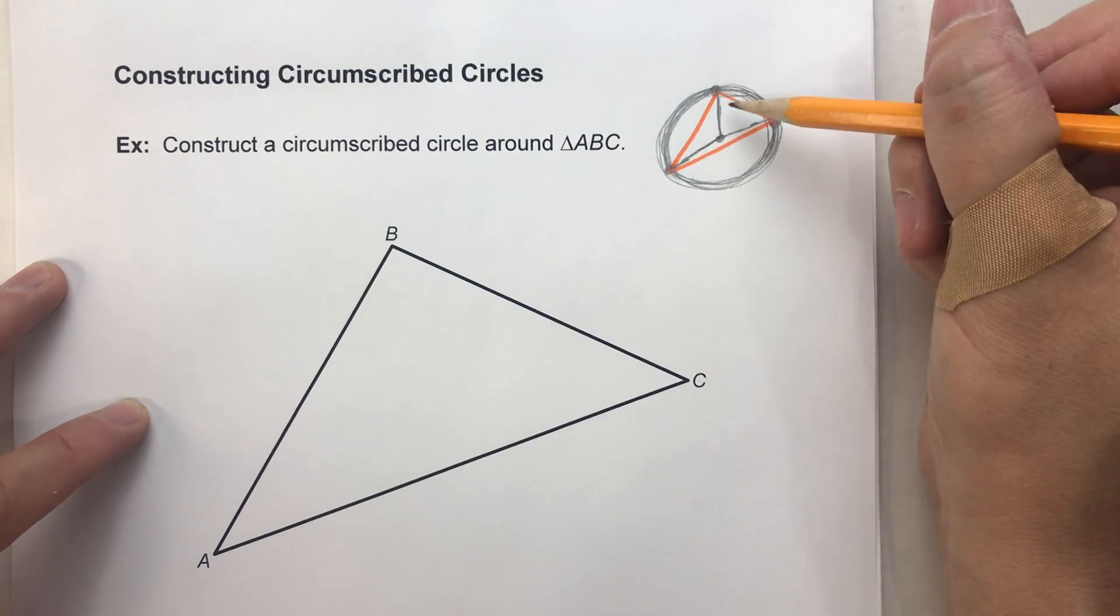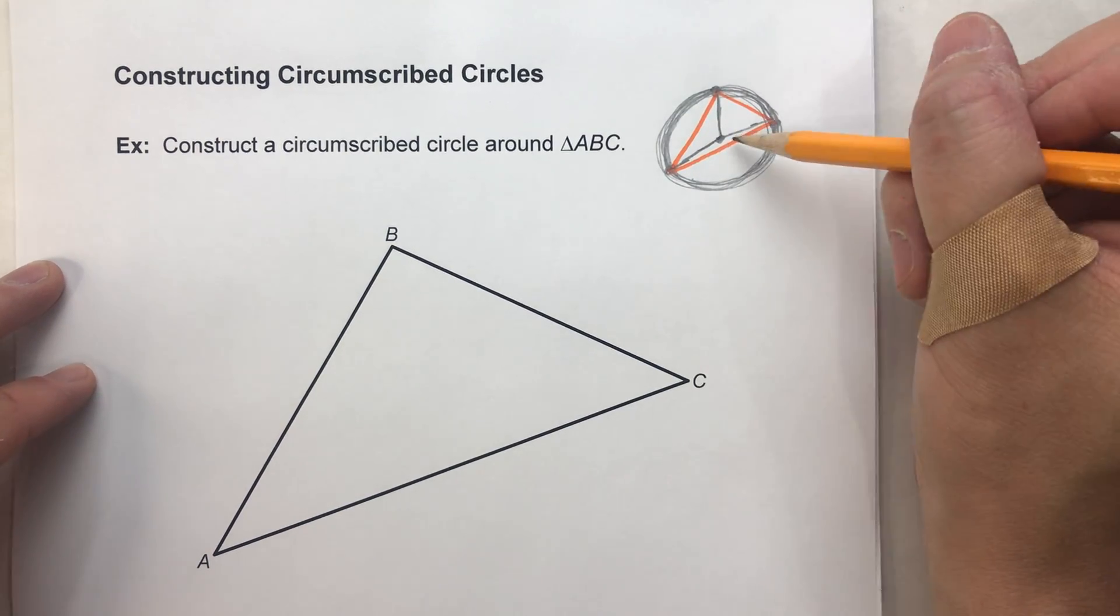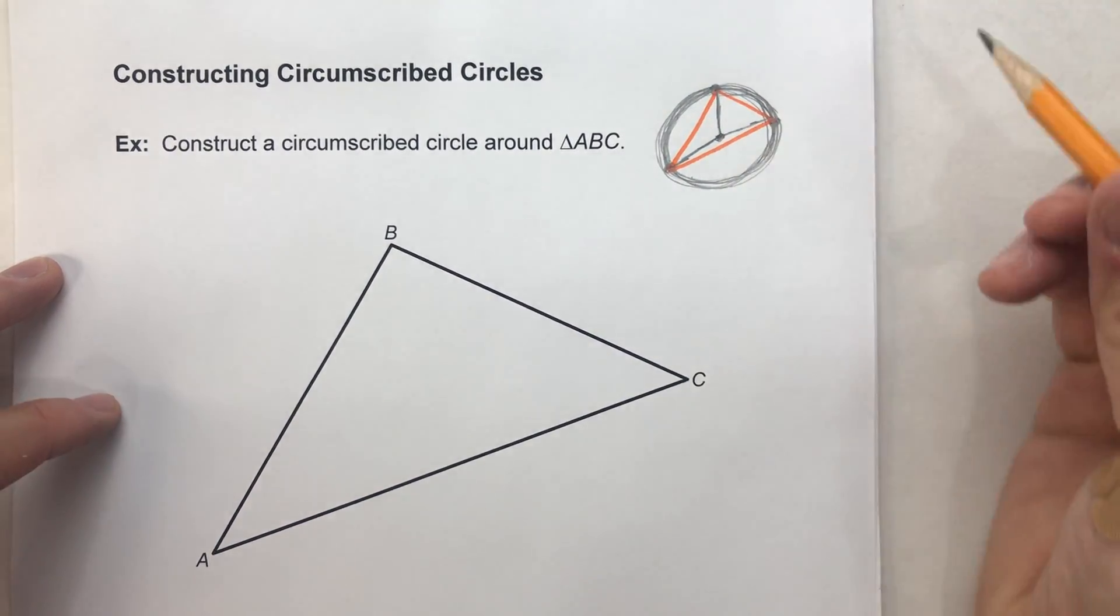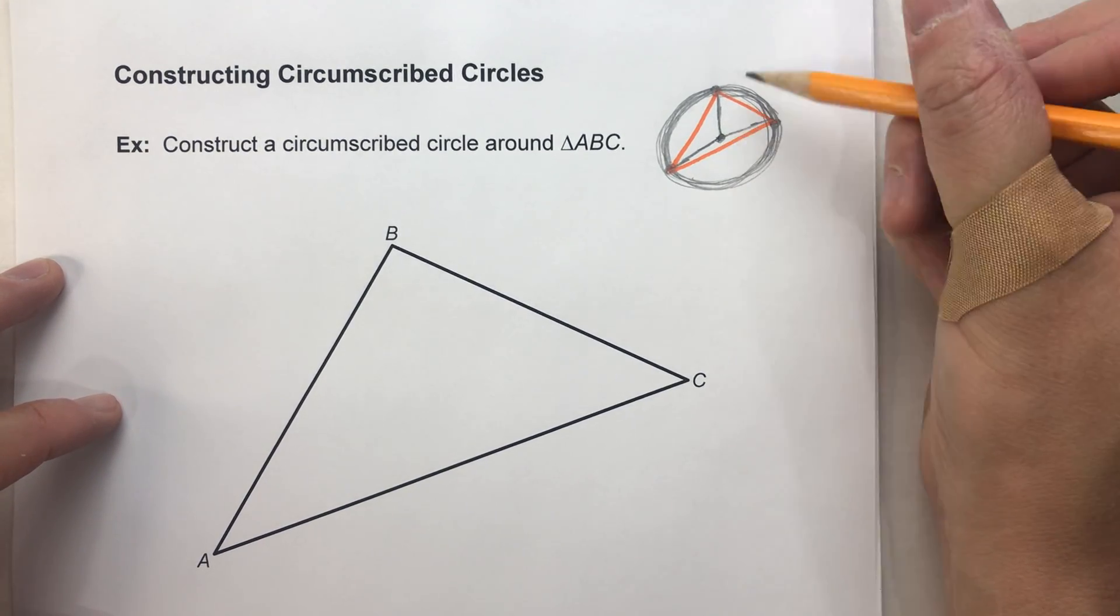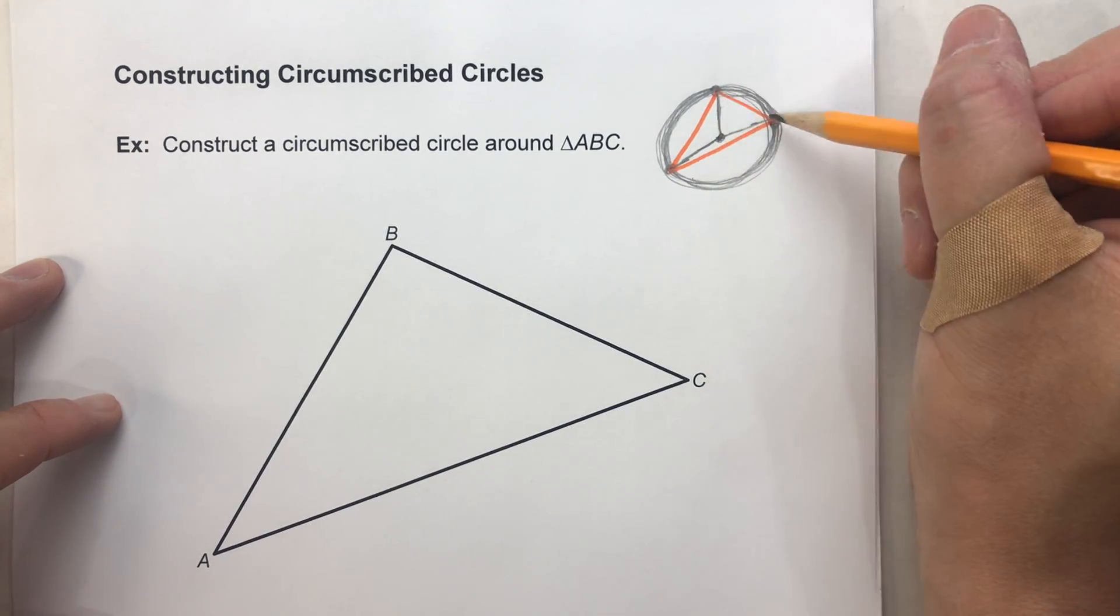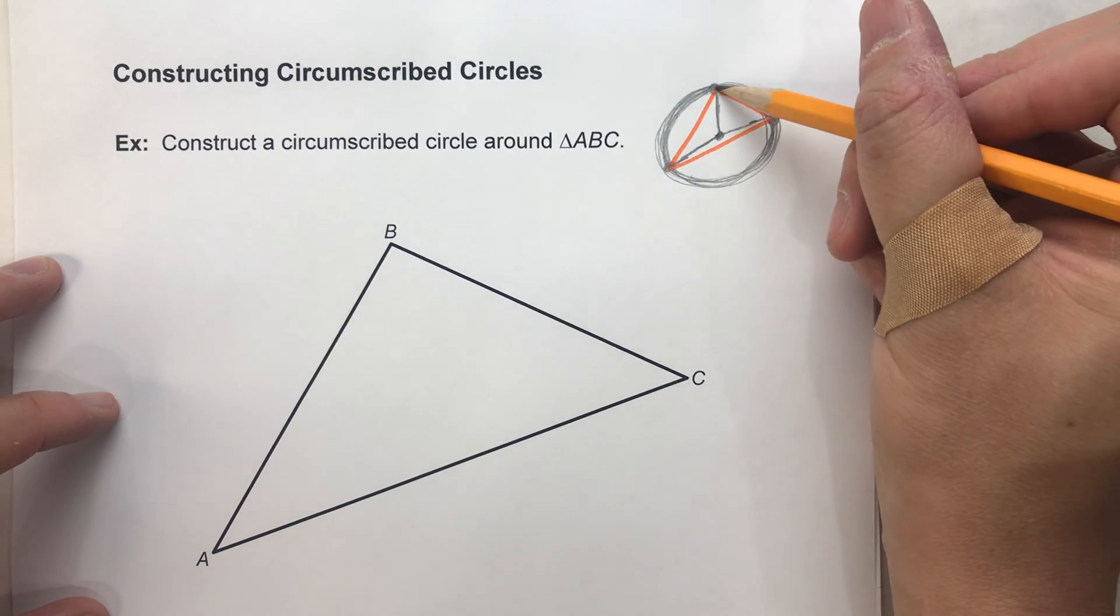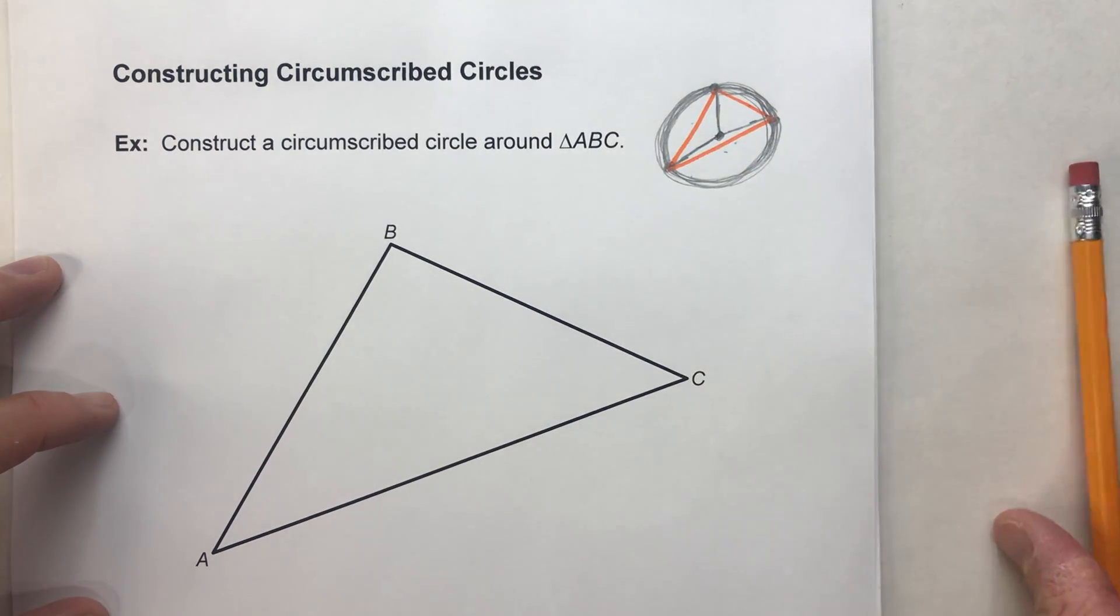So we need the one point that's equidistant to all three vertices of our triangle, because that's going to be the center of our circle. Now, we know how to do that, because we know that the circumcenter is the one point equidistant from all three vertices of a triangle. The circumcenter is where the perpendicular bisectors of each side of our triangle intersect.